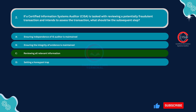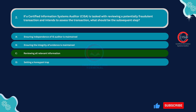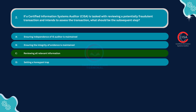Reviewing all relevant information is crucial for a thorough investigation. The CISA needs to gather all available data related to the transaction, such as transaction details, system logs and audit trails, user activity associated with the transaction, communication records, and security controls in place.